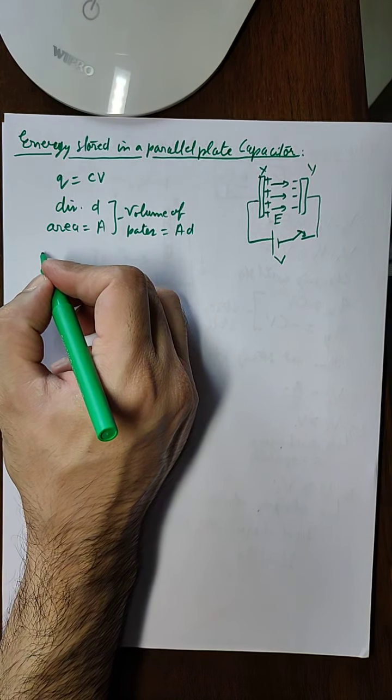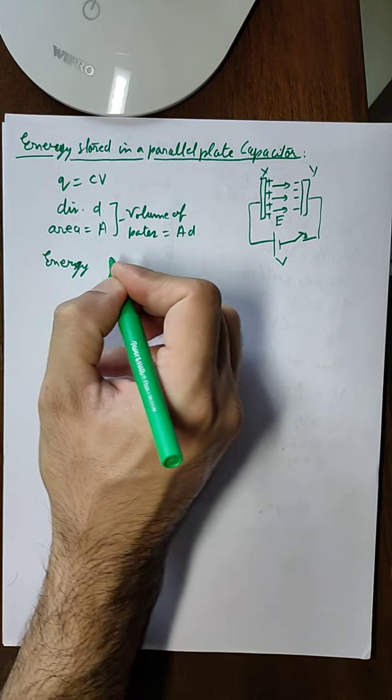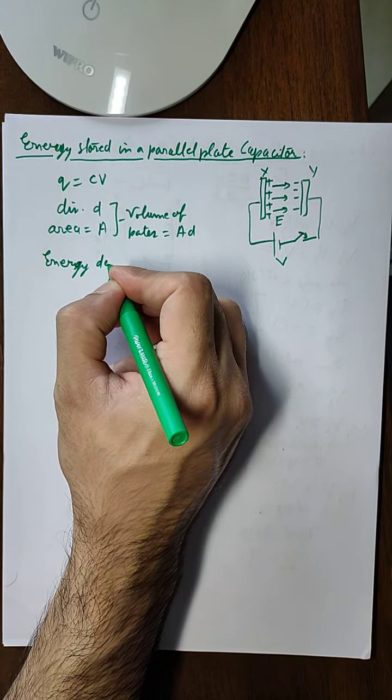In one of the previous videos we studied the energy density, denoted as small u. This is the energy per unit volume, and it equals half epsilon naught E squared. Since energy density equals total energy per unit volume, the total energy U equals half epsilon naught E squared multiplied by the volume, which is A times D.